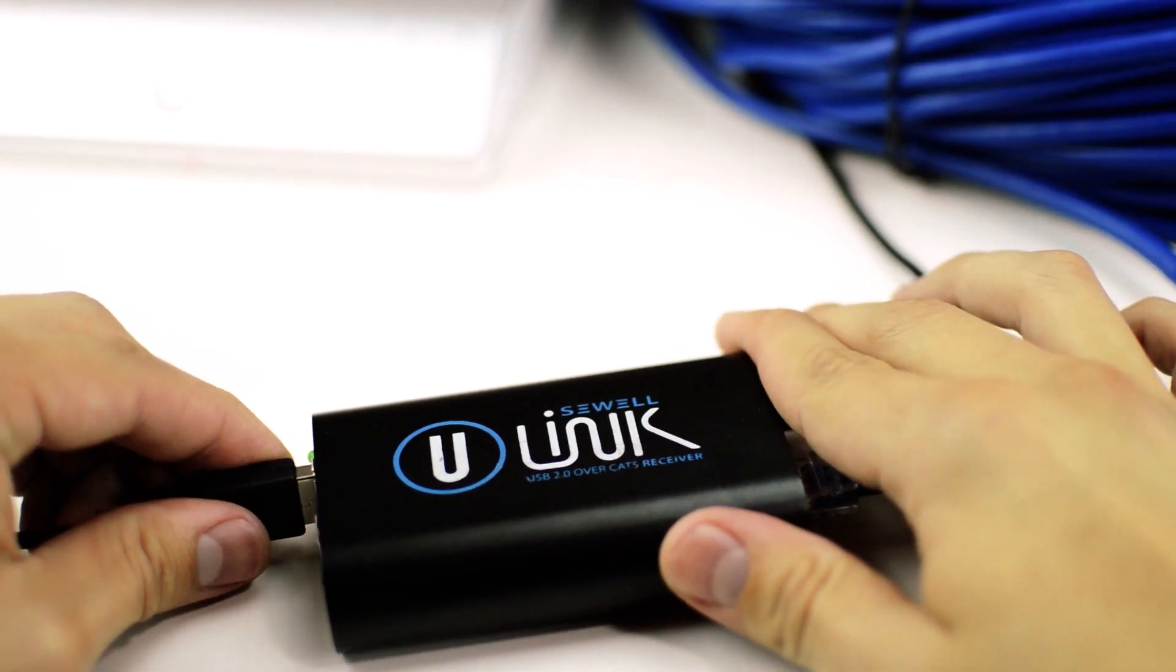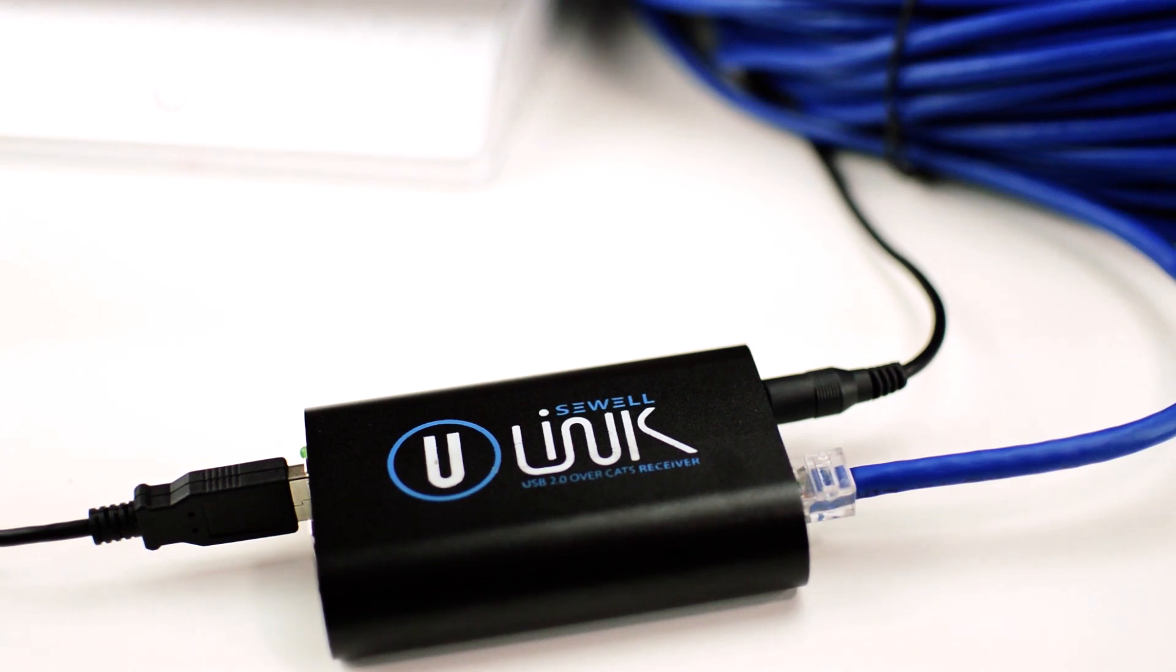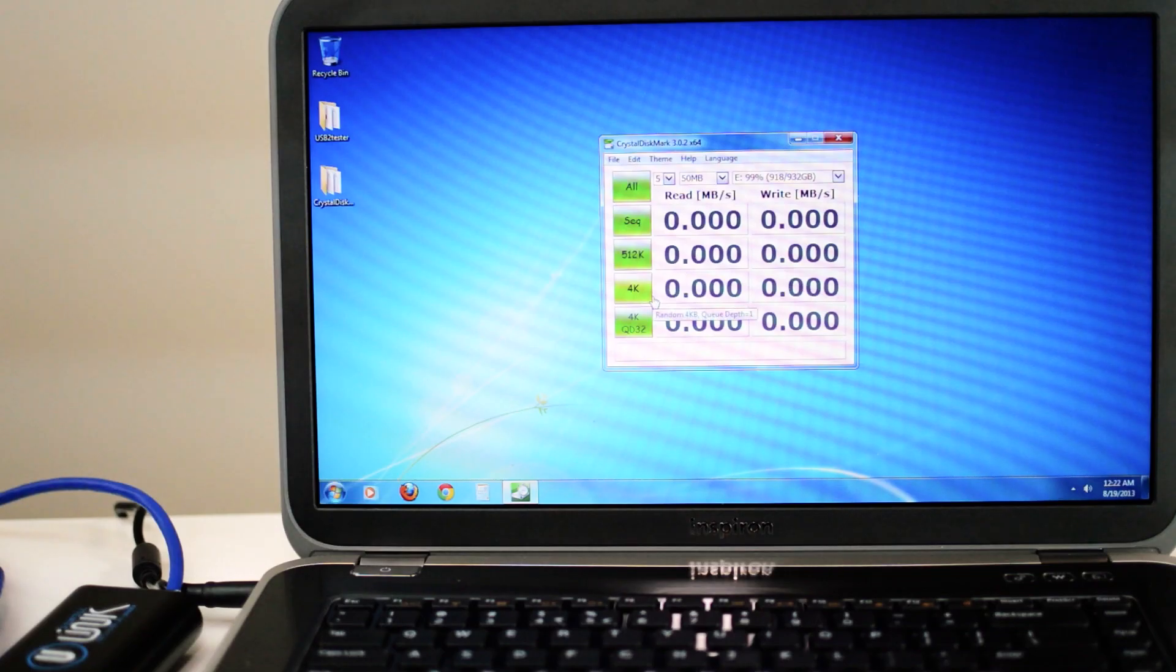Connect the power supply to the receiver. And then connect your device, in our case the hard drive. Since the U-Link is plug and play, the computer installs it automatically without the need for you to install any drivers on PC or Mac.